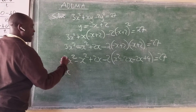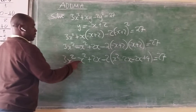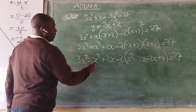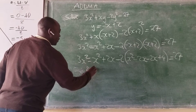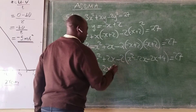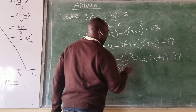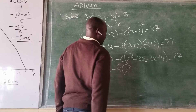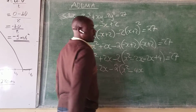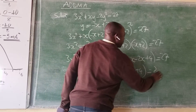So we have 3x squared. We can simplify like terms: 3x squared minus x squared gives us 2x squared. Then plus 2x. Before we open the bracket, we can also work on the like terms inside: x squared minus 2x minus 2x gives us negative 4x, and plus 4 equals 27.